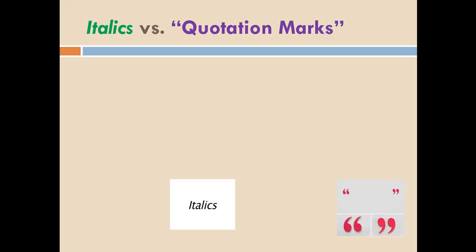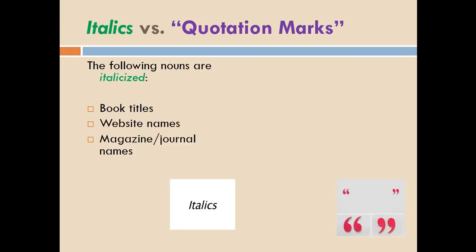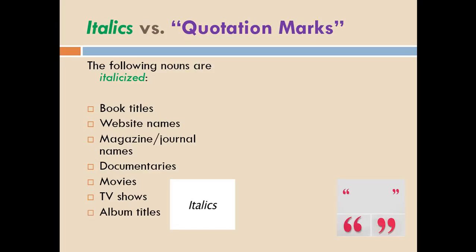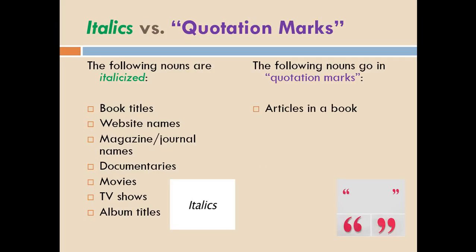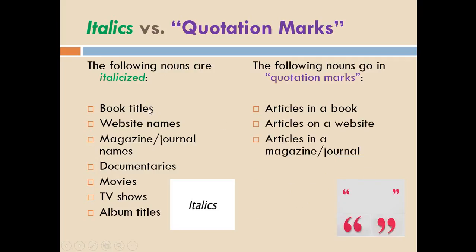Things that get italics are big things that can be broken into smaller pieces — the title of a book, a website, a magazine, journal, newspaper, documentary, movie, TV show, or album. Those smaller pieces that come from the big things go in quotation marks: an article from a book, website, magazine, journal, or newspaper, a TV episode, or a song title. These are pieces of something bigger, so they go in quotation marks.